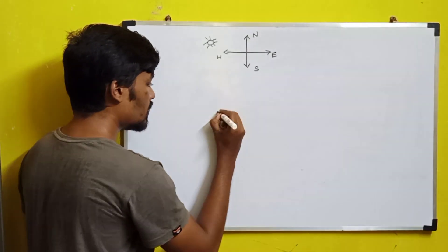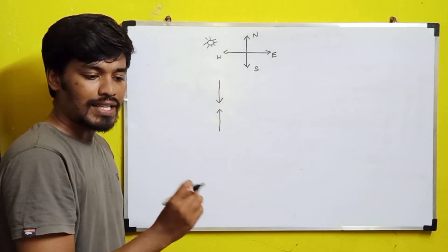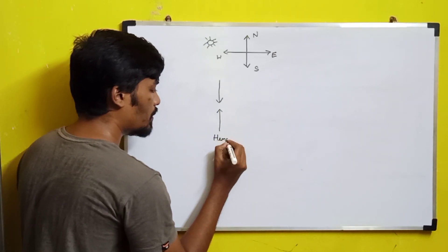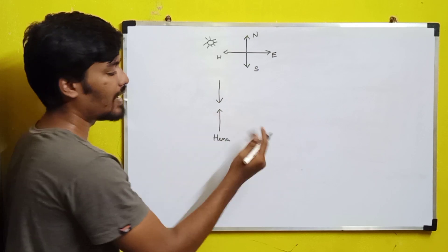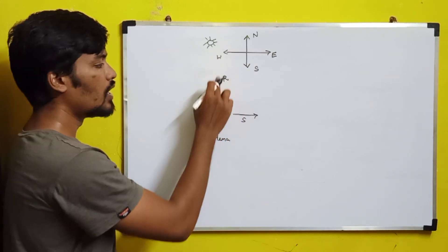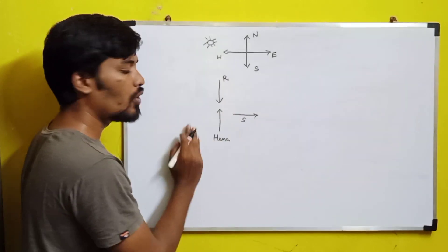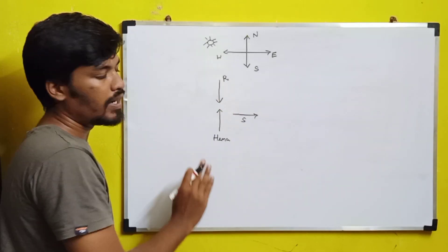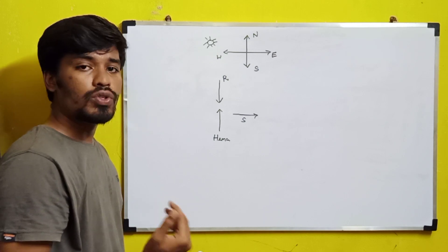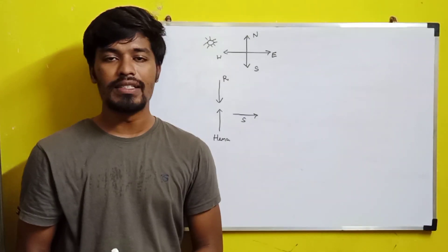Hema and Rekha are facing towards each other. Hema's shadow was exactly to the right of Hema. Assume this is Hema, and her shadow is going to be on the right side — in this direction. And Rekha is this one. Rekha and Hema are facing towards each other, and during sunset Hema's shadow was to the right of Hema. Which direction was Rekha facing? Rekha was facing towards the south direction. Option B — south — is the correct answer for the last question.